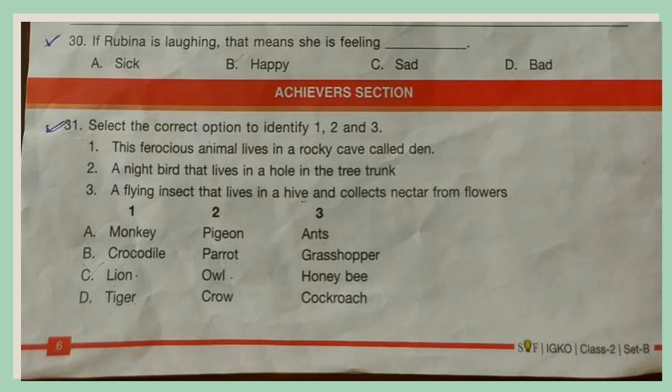Achiever Section. Question 31. Select the correct option to identify 1, 2, and 3. 1. This ferocious animal lives in a rocky cave called a den. 2. A night bird that lives in a hole in the tree trunk. 3. A flying insect that lives in a hive and collects nectar from flowers.